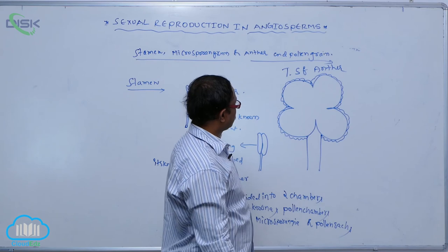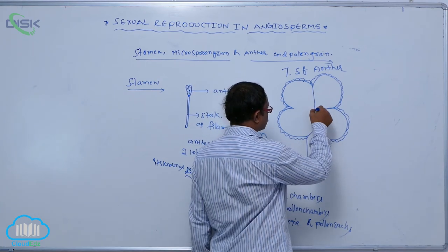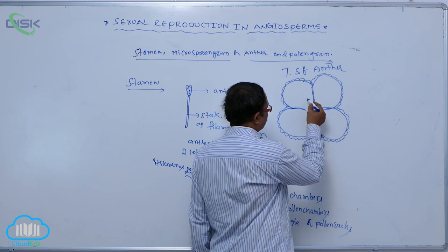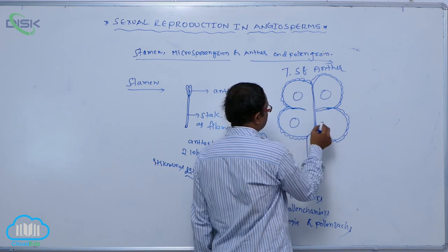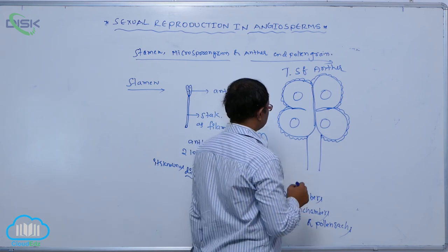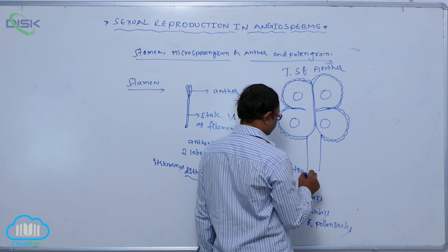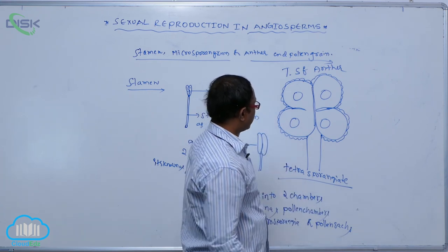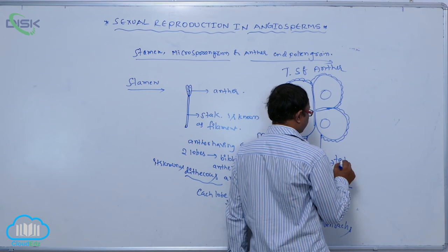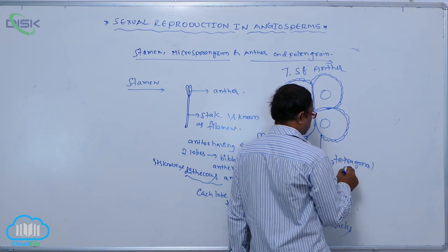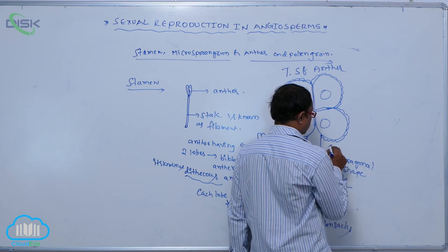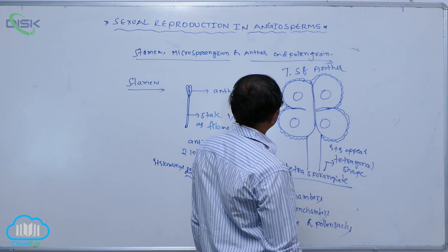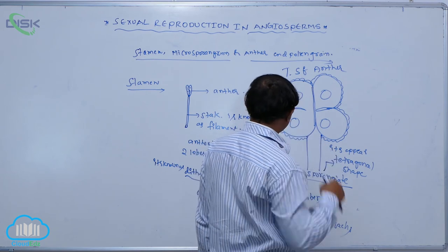In the transverse section of the anther, there are generally two lobes with grooves between them. Totally there are four microsporangia, so this is known as tetrasporangiate. They appear in a tetragonal shape. In the T.S. of the anther, generally there is a bilateral condition.